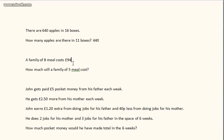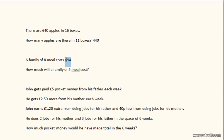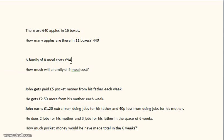Half of 47: half of 40 is 20, half of 7 is £3.50, so that's £23.50. We need to half that one more time to get one meal. Half of £23.50: half of 23 is £11.50, and then half the 50p is 25p. Add that onto £11.50 and your answer is £11.75.